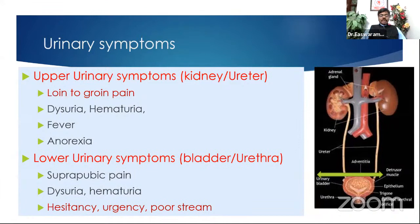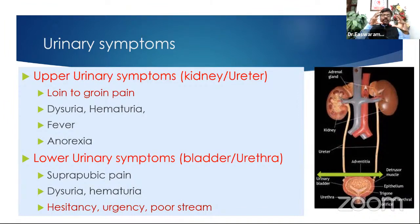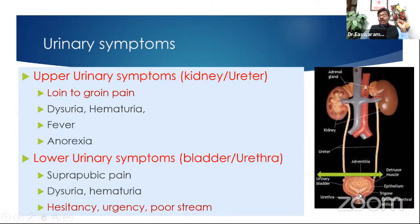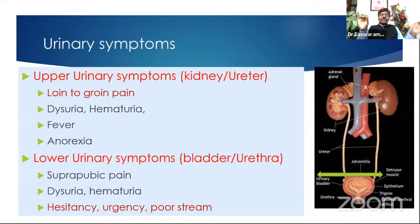For lower urinary symptoms — bladder and urethra — the pain is suprapubic. In addition to dysuria and hematuria, patients classically have three additional symptoms of bladder outlet obstruction. The detrusor muscle contracts and the bladder wants to empty, but the patient is not able to void. This may be due to a weak detrusor, an atonic bladder, obstruction at the bladder neck, an enlarged prostate, or a urethral stricture. The first symptom is poor stream — the patient says they used to pass a good stream but now it's dribbling.